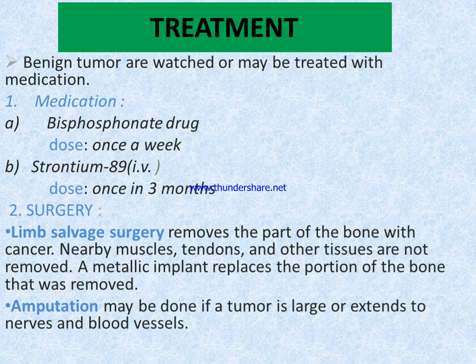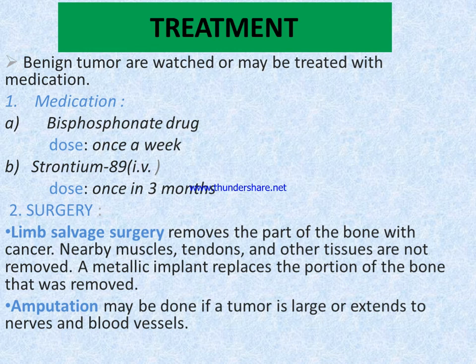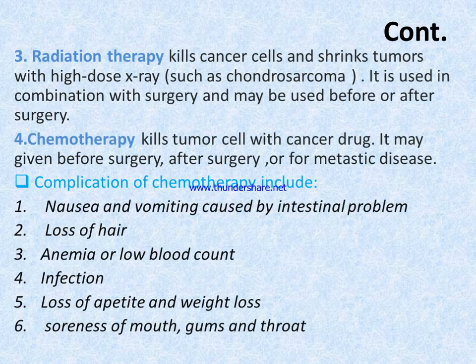For treatment of bone tumors, medication includes bisphosphonate drugs — dosage options are one subcutaneous and second strontium-89, given intravenously once every three months. Surgery includes limb salvage surgery and amputation. Radiation therapy kills or shrinks cancer cells using high-dose X-rays; it is used in combination with surgery and may be used before or after surgery.